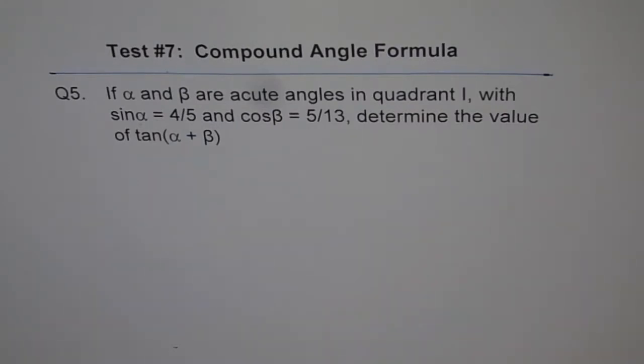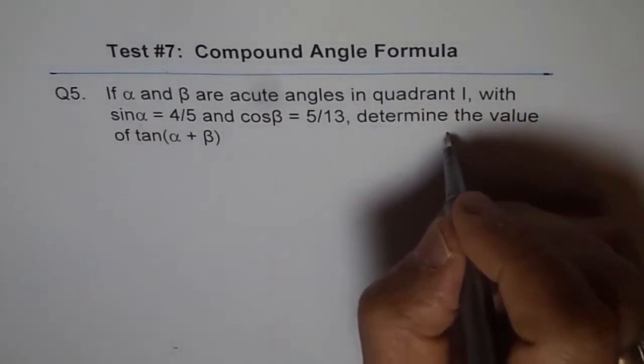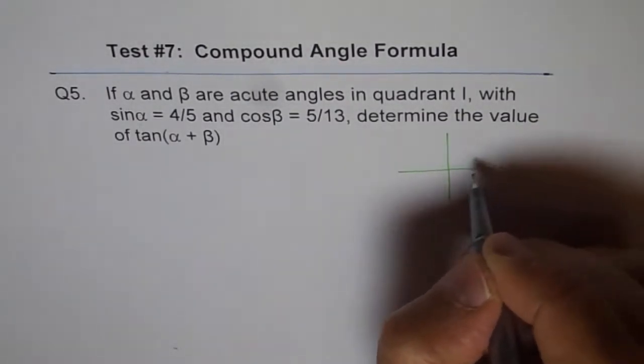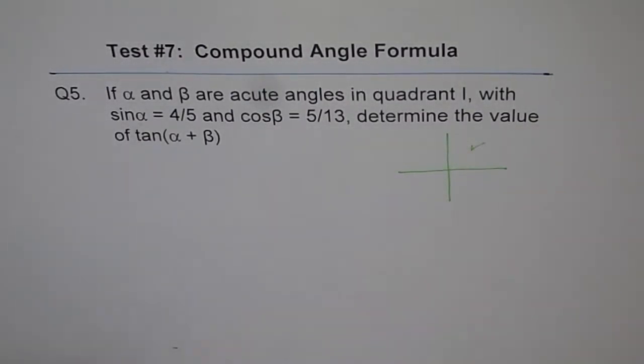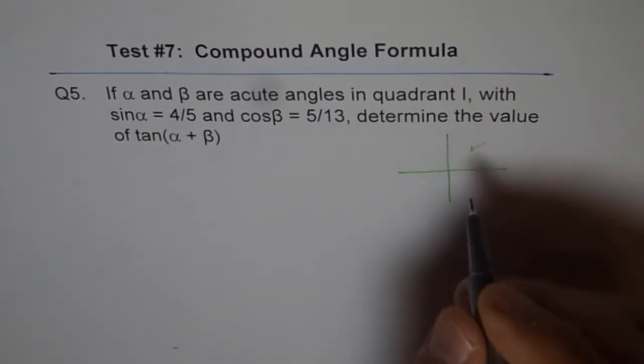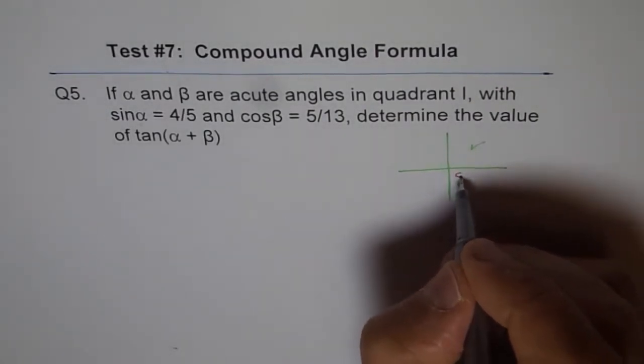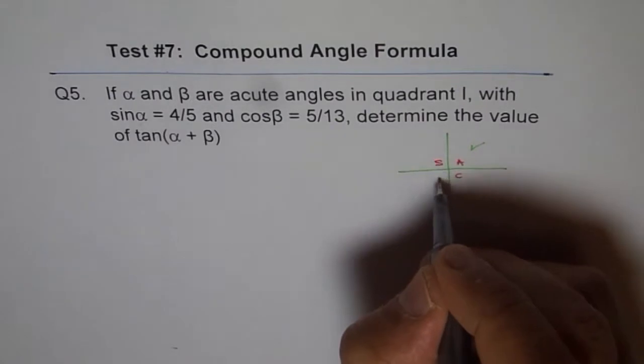So what we should do here is that we know that α and β both are in quadrant 1. And as you know, in quadrant 1, all trigonometric ratios are positive. So all are positive.